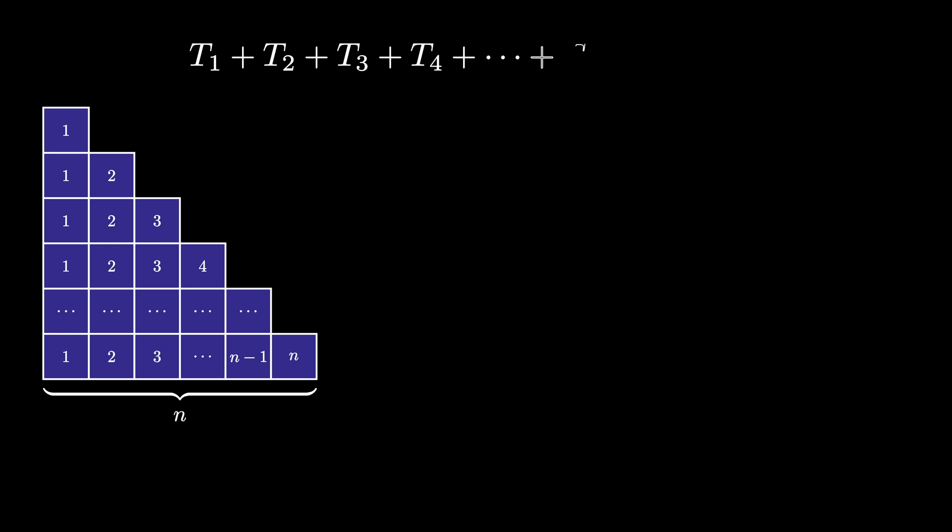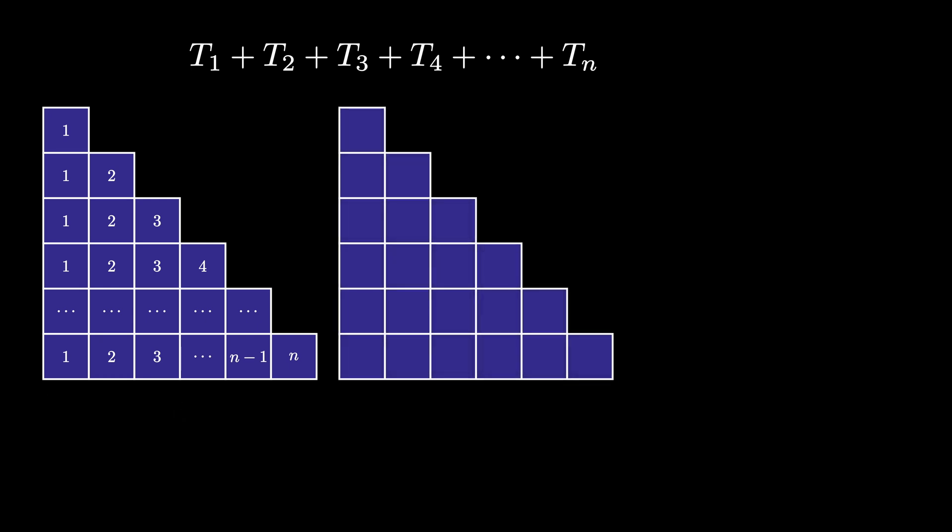Then the number of tokens in this triangular diagram is given by the sum of the first n triangular numbers, t1 plus t2 and so on up to tn. To find this sum, we perform a trick.